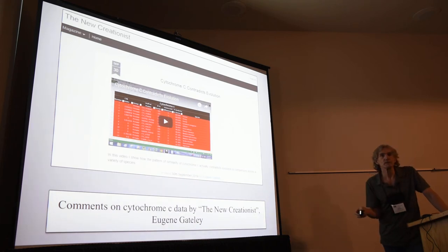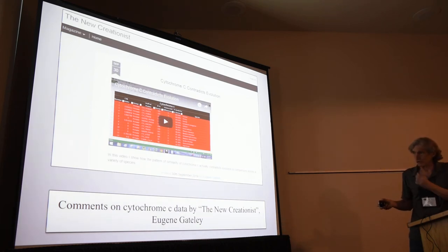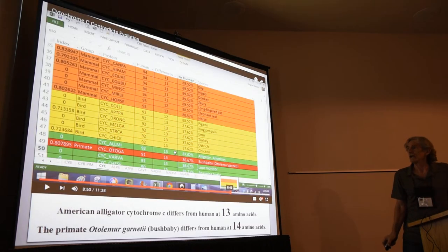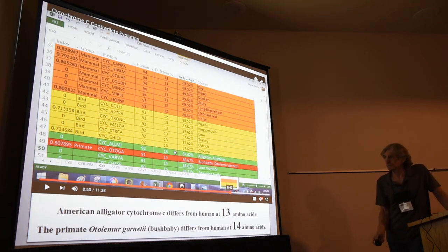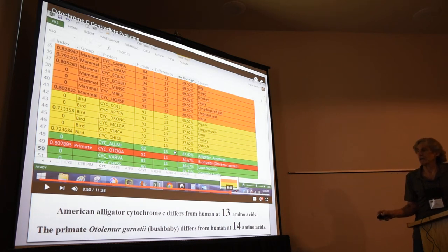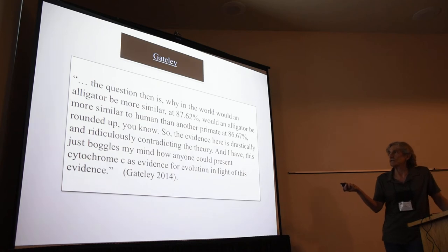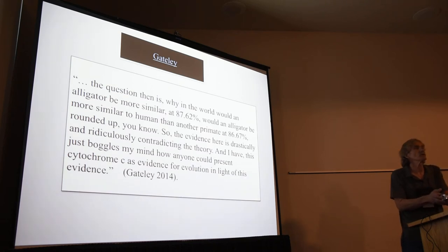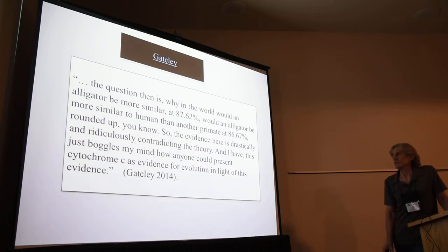The one I want to talk about today mainly is a more recent example. This was brought up a couple of years ago by a creationist named Eugene Gately. What happens here is that you compare cytochrome C in an alligator and a human being, and you find that there are 13 amino acid differences. But then you compare a primate, Otolemur garnettii — a bush baby — and you find 14 differences. He makes quite a thing about this, saying that in one case you have 87% similarity, but in the primate only 86%. Shouldn't the primate be much more closely related to humans than the alligator? He says, 'This just boggles my mind. How can anyone present cytochrome C as evidence for evolution in light of this evidence?'